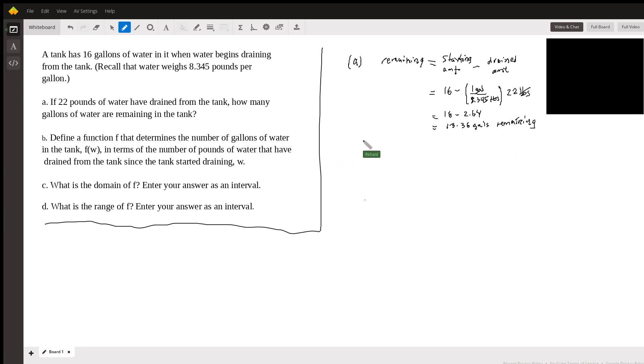Okay, and that's a warm up for part B. Part B is they want a function F that determines the amount of water in gallons remaining. So that'll be our F of W. Now W is the water remaining depending on the pounds drained. So W is going to be in pounds.